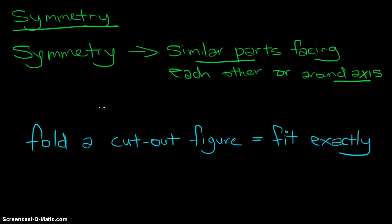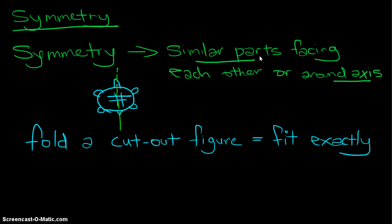For example, let's say I have a turtle here and I split it — I cut the turtle, it's a bit evil but I'm just trying to get my point across. Let's say I cut it this way, just nicely into half. So when you fold this turtle, you will have a similar part because this part will look like this part. So you have similar parts facing each other or around an axis. This line of symmetry acts like an axis.